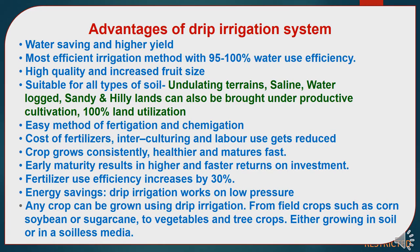Advantages of drip irrigation system: There will be water saving and higher yield. It is the most efficient irrigation method with 95–100% water use efficiency. It provides high quality and increased fruit size, suitable for all types of soil. Undulating terrains, saline soils, waterlogged, sandy, and hilly lands can also be brought under productive cultivation, with 100% land utilization. It is an easy method of fertigation and chemigation. Costs of fertilizers, interculturing, and labor are reduced. Crops grow consistently, healthier, and mature faster. Early maturity results in higher and faster returns on investment. Fertilizer use efficiency increases by 30%, and there is energy saving as drip irrigation works on low pressure. Any crop can be grown using drip irrigation — from field crops such as corn, soybean, or sugarcane to vegetables and tree crops, whether growing in soil or soilless media.